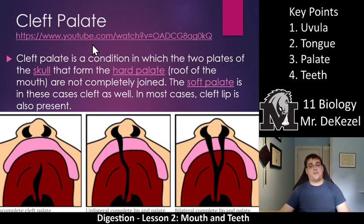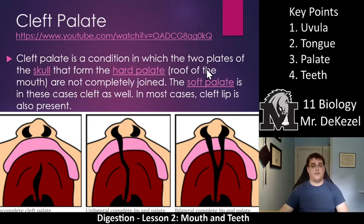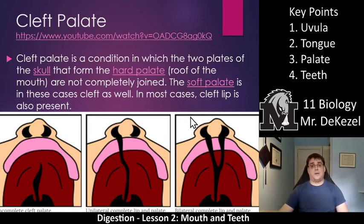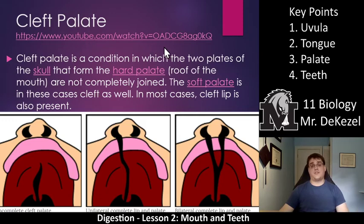There's a video here for a cleft palate that you can check out. A cleft palate is a condition in which the two plates of the skull that form the hard palate, or the roof of your mouth, do not completely join. You can have a partial, full, or double cleft palate. In these cases, you can also have a cleft lip, which is a hole in the lip that leads up to your nostril. These can be repaired by surgery and are often barely noticeable. A cleft palate is essentially a cavity in the roof of the mouth, and it can be fixed at a very young age.